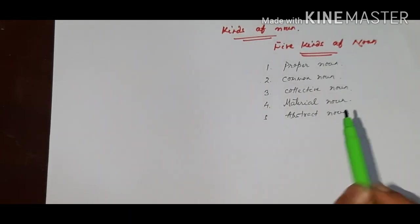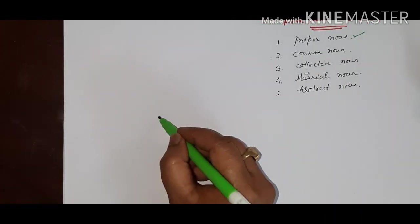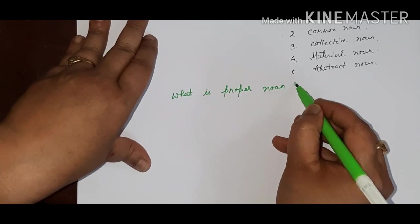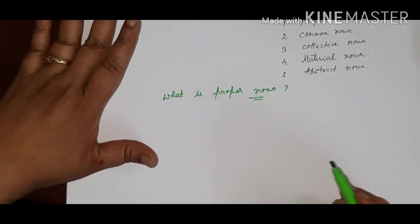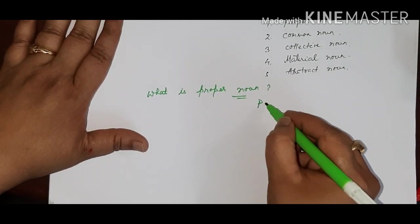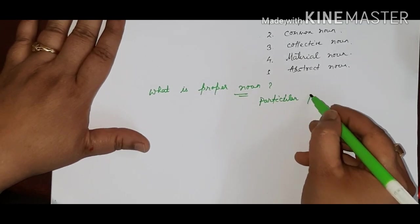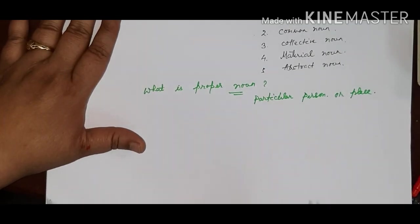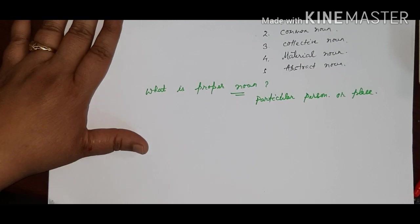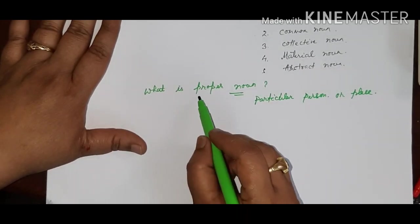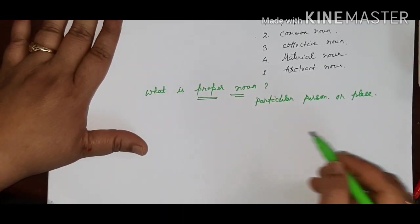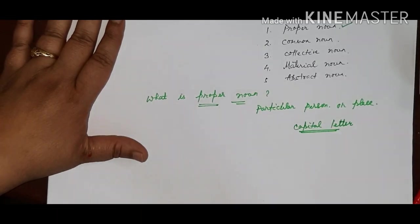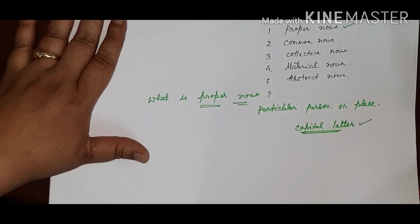Children, first we are going to discuss about proper noun. What is proper noun? Name of a particular person or place is known as a proper noun. Particular person or place. Children, that can be your name, your friend's name, your school name, and so on. They are the special naming words. That's why they are known as the proper noun. Remember, children, proper noun always starts with a capital letter.